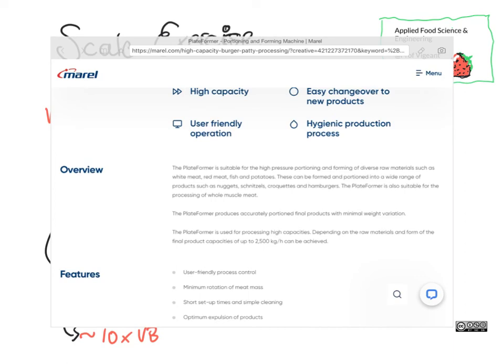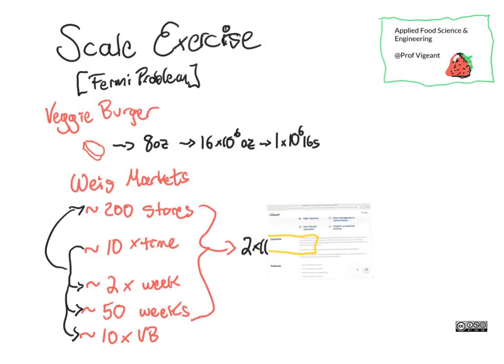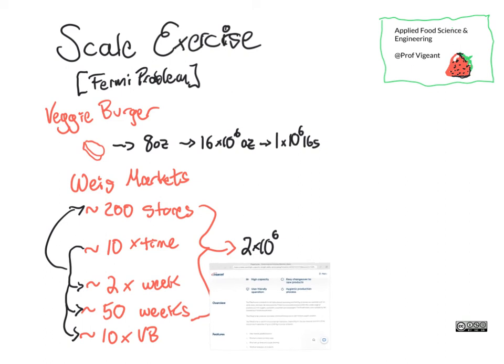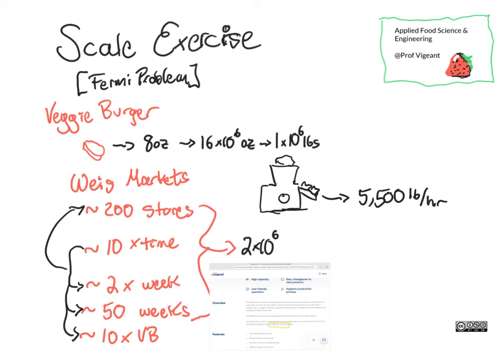So, hold that number. The patty-forming machine has not too big a footprint — you can fit this easily in a ten-foot by ten-foot space. Meat goes in at the top, burgers come out, and it was 2,500 kilograms per hour — that's about 5,500 pounds of burgers pumping out per hour.